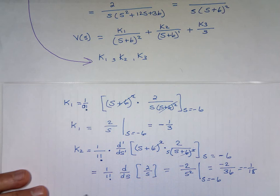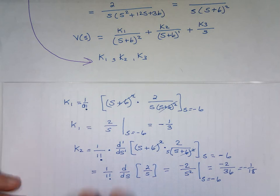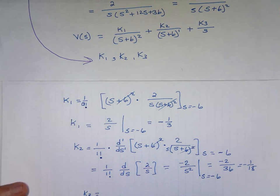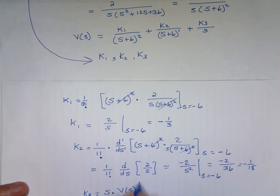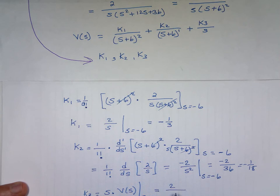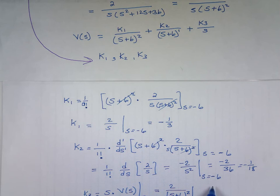And what about k_3? That's not a repeated root — that's from the previous method. So k_3 is going to equal: multiply s times V(s), because it's sitting on top of s, and evaluate at s equals 0. That's 2 over (s plus 6) squared at s equals 0, and that gives us positive 1/18.